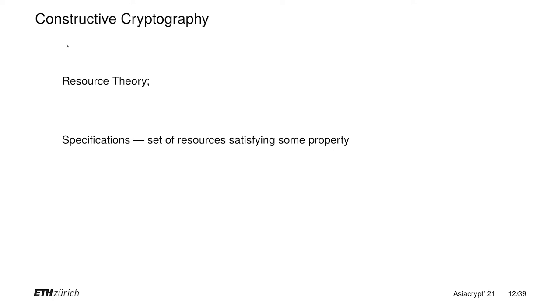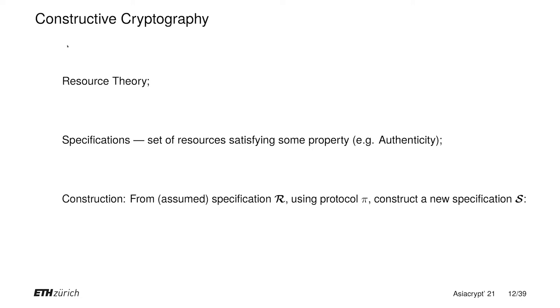Constructive cryptography is a resource theory. From the assumed resources, you construct new ones. Recall the notion of specification, which is just a set of resources satisfying some guarantee. The notion of construction says that if you have an assumed specification R, using a protocol PI, you can construct a new specification which gives you some desirable guarantee. Essentially, if you take any resource in specification R and attach to it protocol PI, you end up with a resource which is in the new specification S. So a construction statement holds if this subset relation holds.